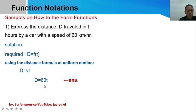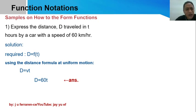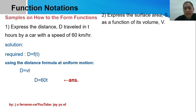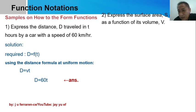You notice that the variable involved is the distance d, and it is expressed as a function of time t. So as easy as that — there is nothing to worry about, just familiarize yourself. Number two: you are asked to express the surface area — we'll use the symbol S — of a cube as a function of its volume v.